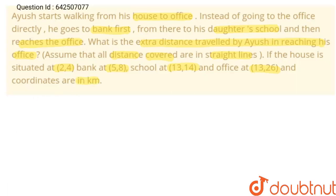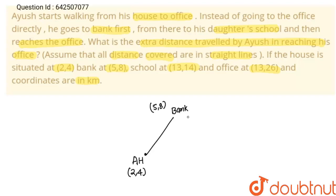Let's solve this problem. Suppose this is Ayus's house, with coordinates (2,4). Then he travels to the bank first; the coordinates of the bank are (5,8). From there he went to his daughter's school, whose coordinates are (13,14).